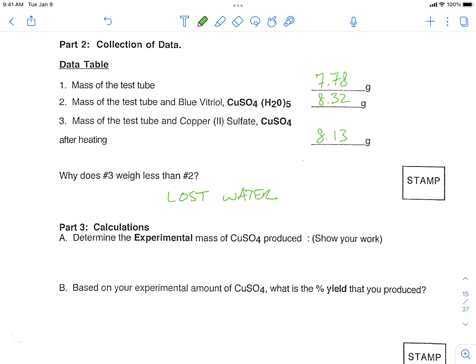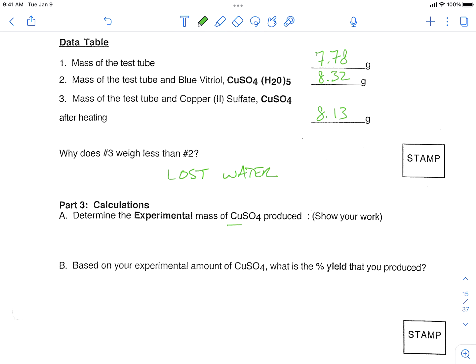Now, we're going to figure out our experimental mass of our copper sulfate that is produced. So this is not with the water, this is without, so that's involving here. But this particular mass has the test tube in it.